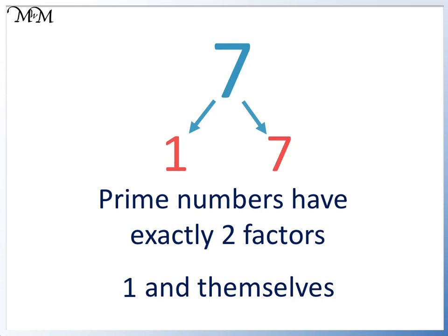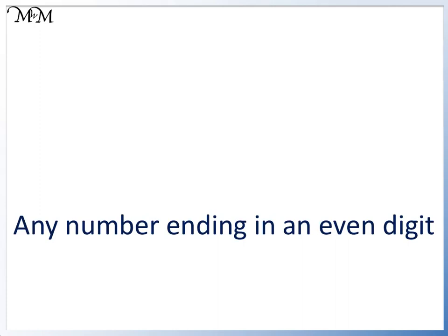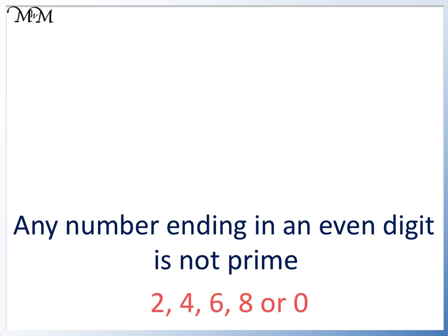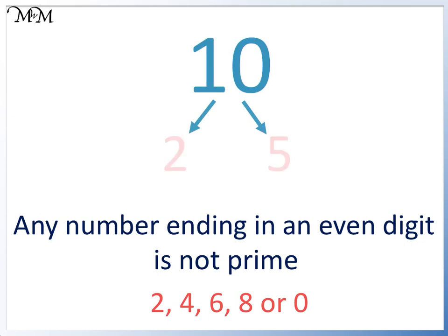These prime numbers are not easy to find. One trick we have is that 2 is the only even prime number. It is 1 times 2. Any other even number is in the 2 times table and can be divided by 2. So apart from 2, any number ending in an even digit is not prime. We look at the last digit on the right of the number, and if it is 2, 4, 6, 8, or 0, the number is not prime. 4 is 2 times 2, 6 is 2 times 3, 8 is 2 times 4, 10 is 2 times 5.